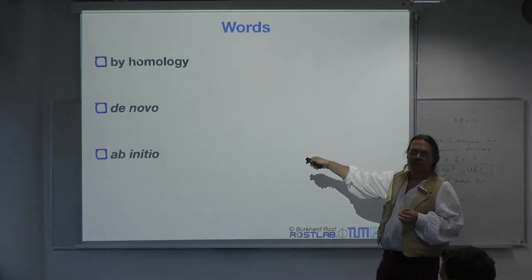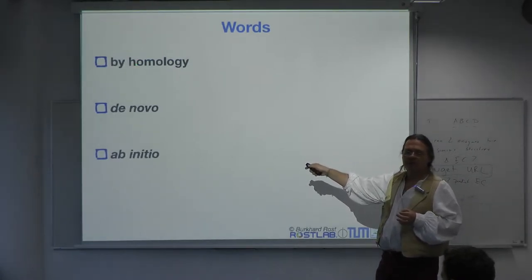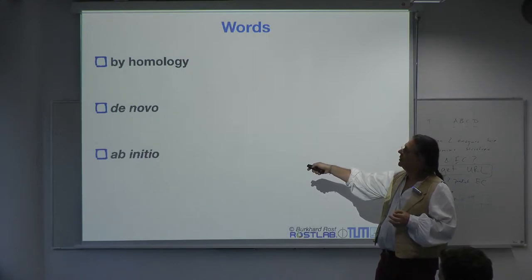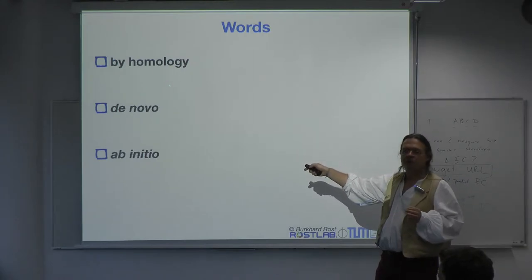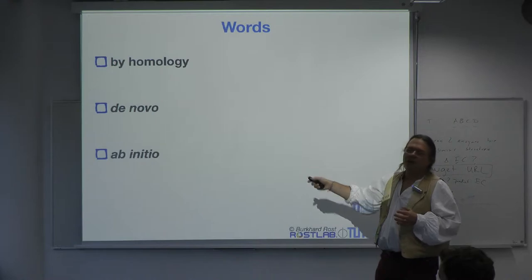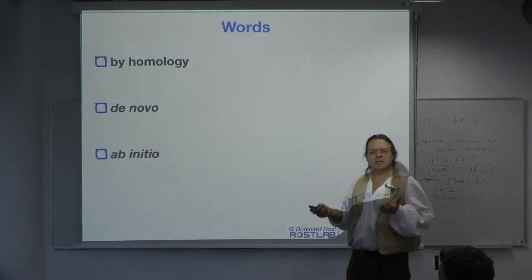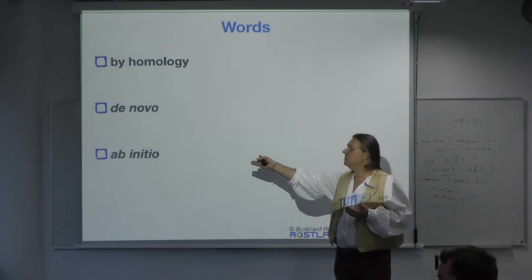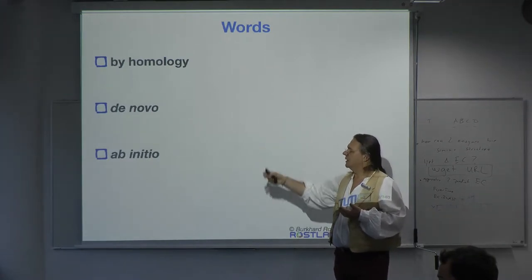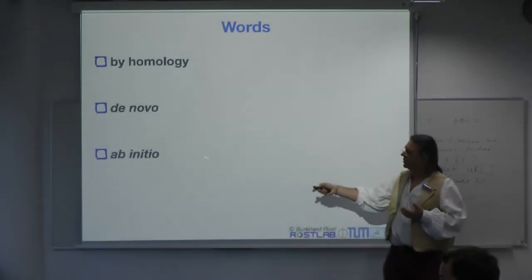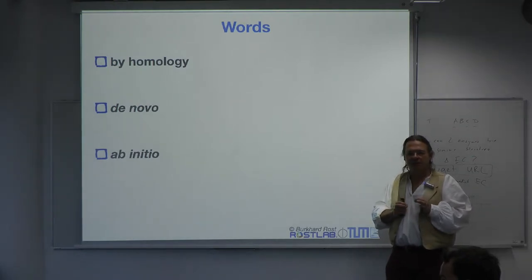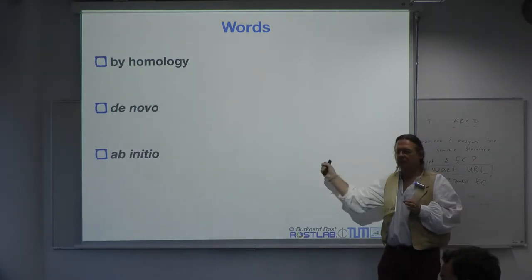This is similar in some philosophical sense: in homology you assume there's an evolutionary relation; in novel methods you assume the machine learning device extracts something that ultimately is a similar signal. Ab initio, in contrast, is really the idea that you have a first principle and that you can infer from first principle — like how the Sun attracts Earth.